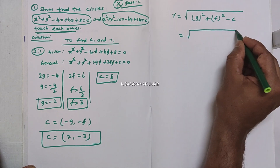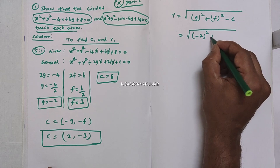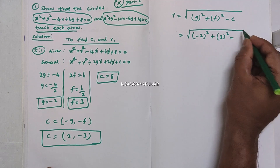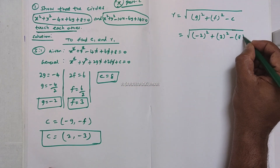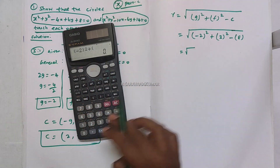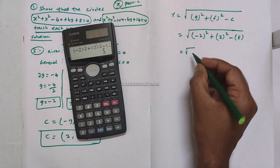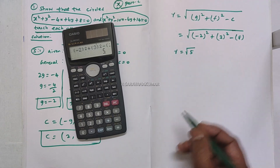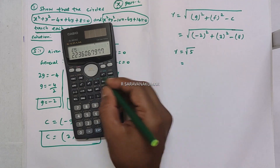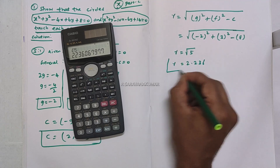We substitute g = -2 and f = 3 into the radius formula: R = √(g² + f² - c). So R = √((-2)² + 3² - 8) = √(4 + 9 - 8) = √5 ≈ 2.236. This is the radius value of the first circle.